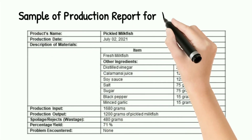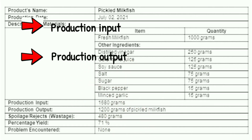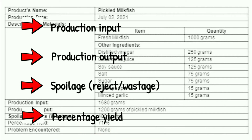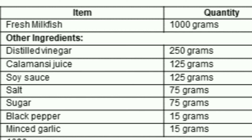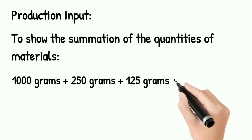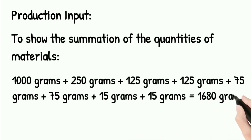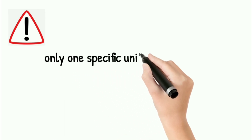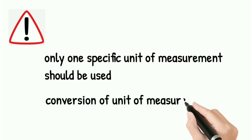This is a sample production report for pickled milkfish that we will use to explain how to determine the production input, production output, spoilage or rejects or wastage, and percentage yield. Production input is 1,680 grams since it is the total sum of all quantities of items needed in making the product. To show the summation: 1,000 grams + 250 grams + 125 grams + 125 grams + 75 grams + 75 grams + 15 grams + 15 grams = 1,680 grams. In adding the quantities of materials, make sure only one specific unit of measurement is used. If other units are present, conversion of units of measurement must be done.